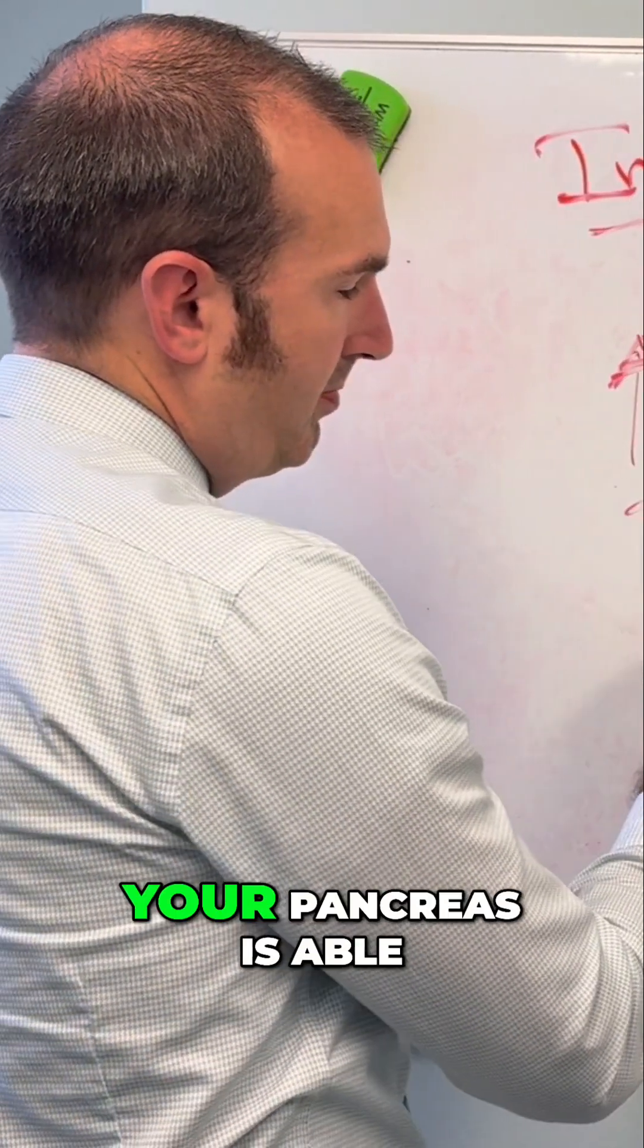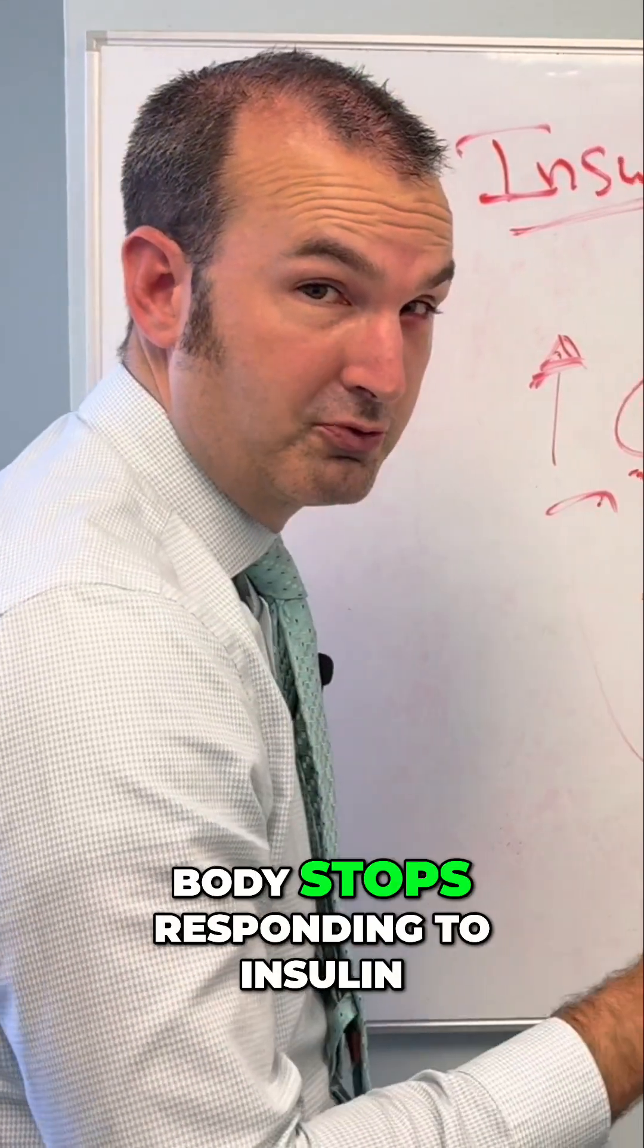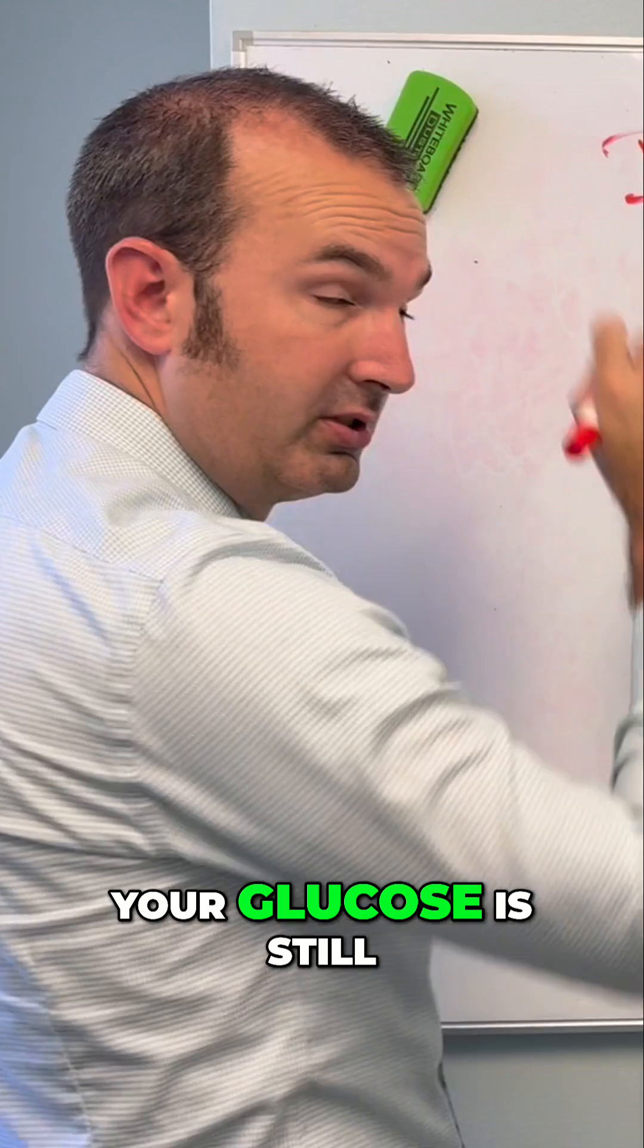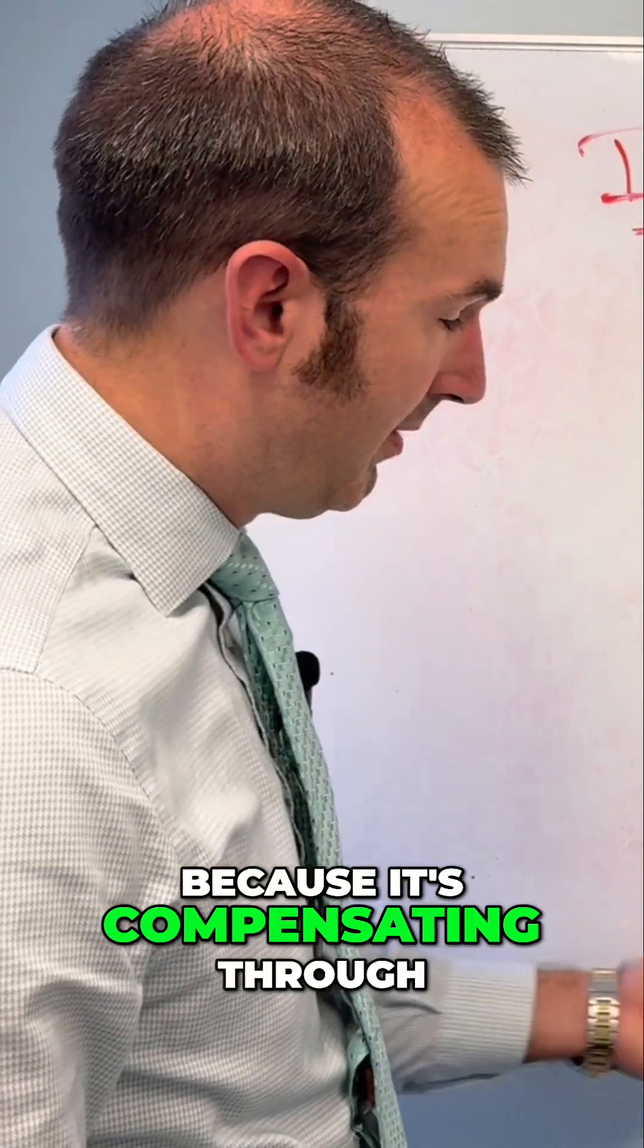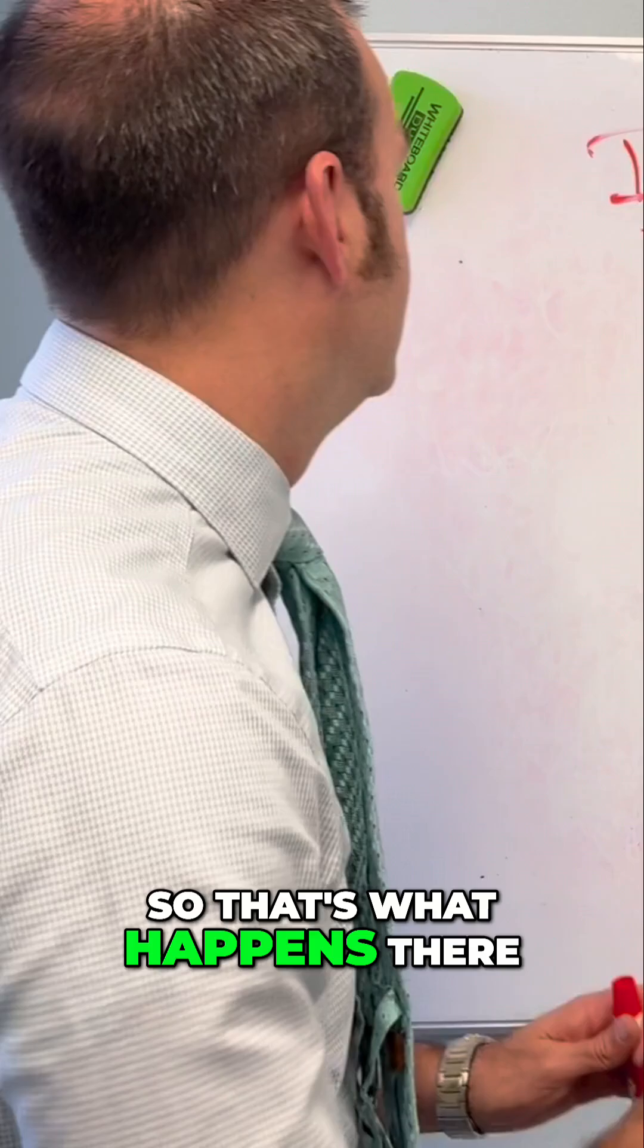But as long as your pancreas is able to keep pumping enough insulin and before your body stops responding to insulin, your glucose is still going to be normal because it's compensating through increased insulin. So that's what happens there.